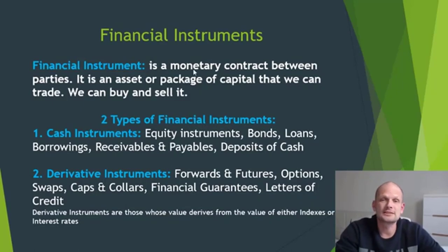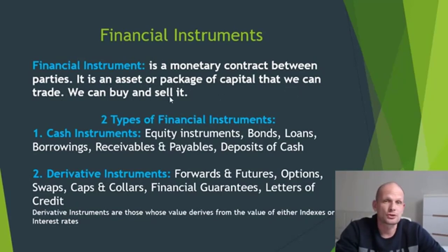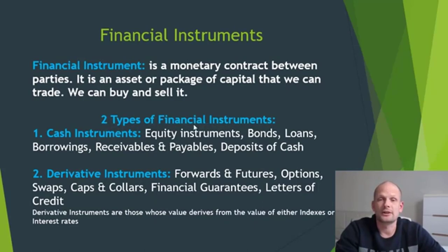A financial instrument is a monetary contract between parties. It is an asset or package of capital that we can trade — we can buy and sell it. Financial instruments are divided into two bigger groups: cash instruments and derivative instruments.